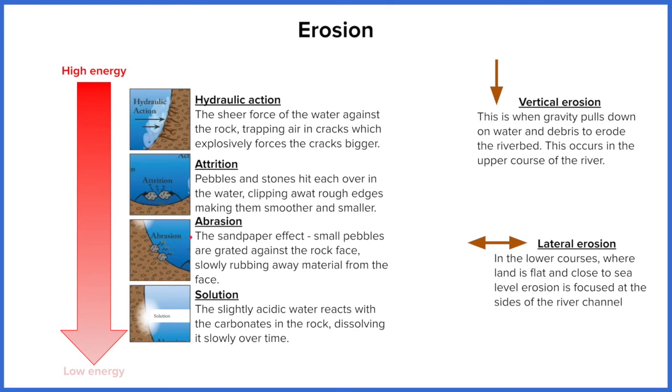We then have abrasion and this is often called the sandpaper effect. Small pebbles are rubbed against the side of the cliff or the side of the riverbed and they sandpaper away at that, making it smaller or creating an undercut.